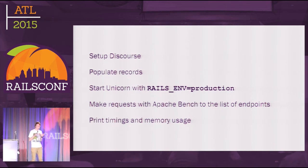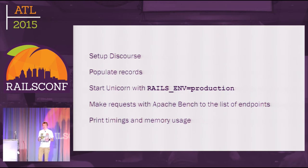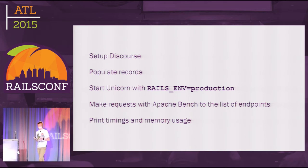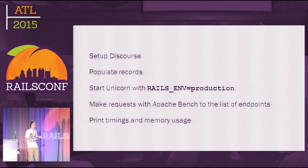In this benchmark, Discourse sets up the database, populates it with records, starts a Unicorn in production environment, and makes a lot of requests using Apache Bench. Then the benchmark reports timing and memory usage. It's a great benchmark — it was used even by Koichi to optimize garbage collection algorithms in MRI, and it's used every time Discourse upgrades to a new Rails version to see if that version is faster or not.